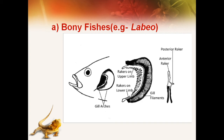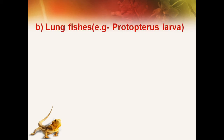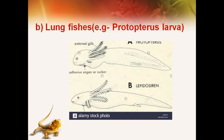Now we will see the gills of lungfishes — for example Protopterus larvae. In lungfishes, the larval form bears temporary brushy and vascular external gill filaments. You can see Protopterus larvae and Lepidosiren larvae; on the lateral sides there is presence of external gills with a brushy structure. In Lepidosiren larvae, many combed elongated external gills lie on either side of the pharynx for aquatic respiration.